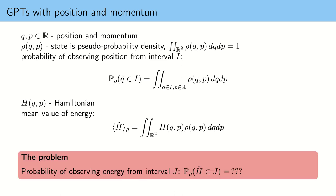But now there's a problem. Although we can compute the mean value of energy easily, we don't have a rule for computing the probability of observing energy from some interval. This is extremely important because mean value is very limited information about energy.